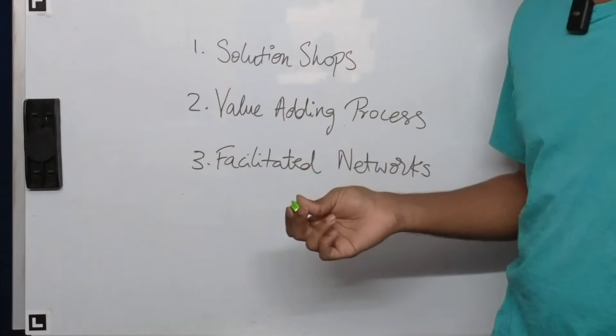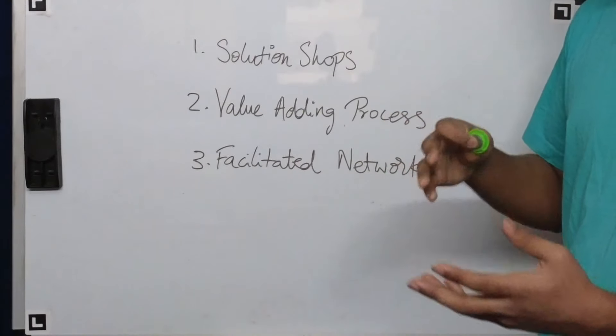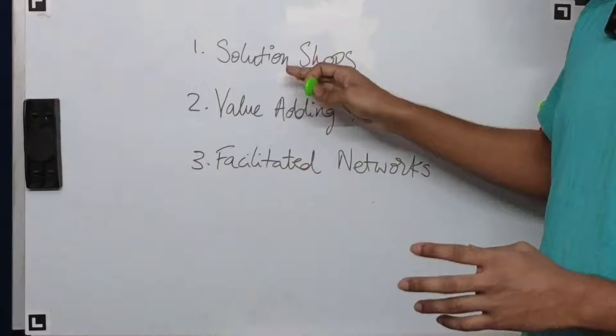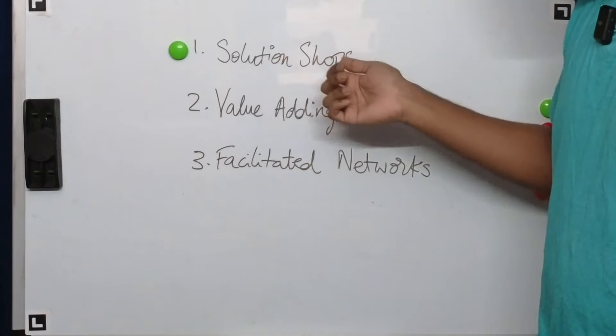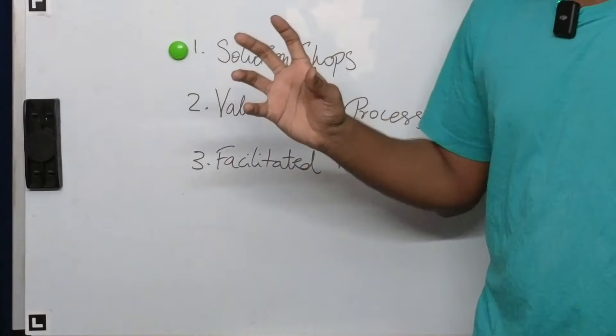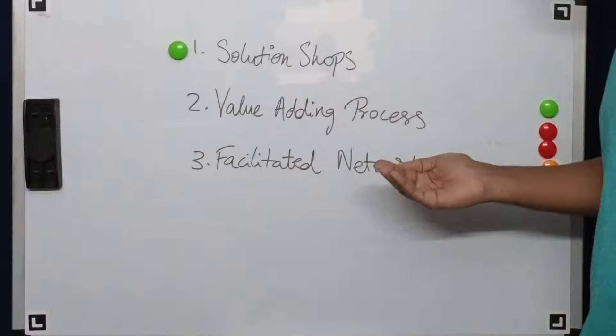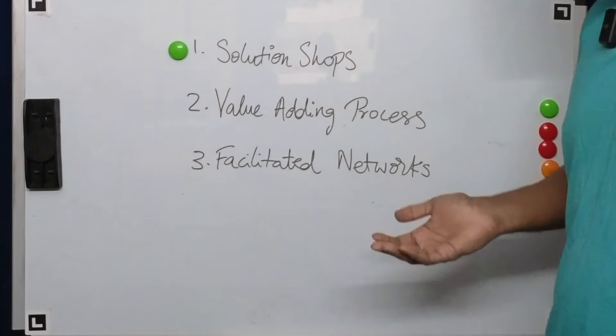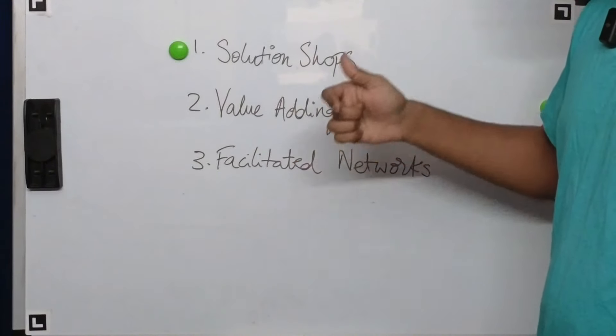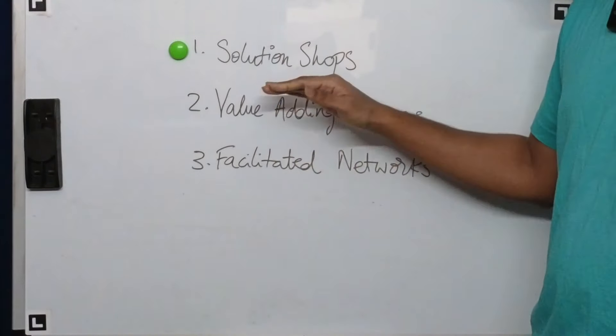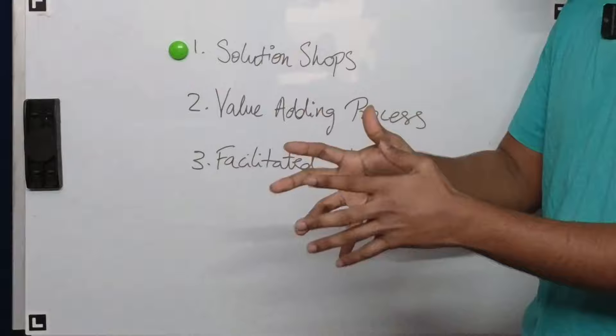This could be, for example, a boutique consultancy agency. It could be a design firm where you go there and then they're able to charge you a certain amount of money, usually up front or after you've solved the problem. Now, in the healthcare domain, this is the equivalent of actually diagnosing a patient. A doctor who is sitting in an OPD practice and then seeing patients one after the other, what they're essentially doing is they are tagging each patient with a diagnosis. The point of the solution shop part of the healthcare system is to tag this particular patient with an as accurate diagnosis as possible.